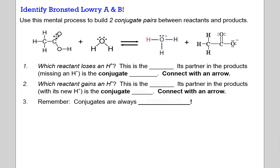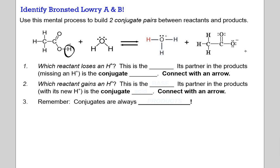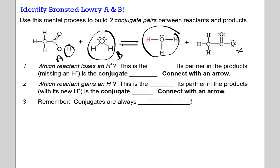We're going to use this process to build two conjugate pairs on these Lewis structures. We need to look at what is changing into what else — which reactant is going to lose a hydrogen ion. We should note there is a hydrogen here that we do not have here — that means it was lost. We should note that water here has turned into hydronium — it's gained a hydrogen. That makes this the acid because it's losing a hydrogen, and this the base.